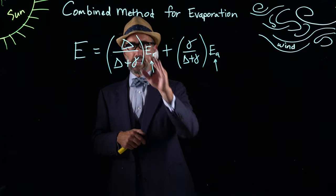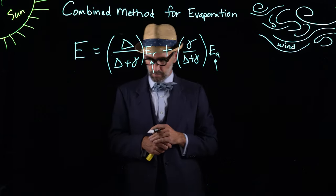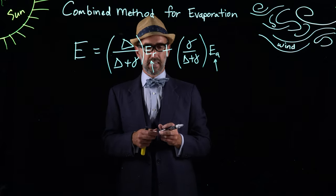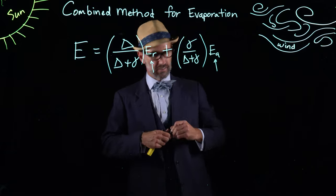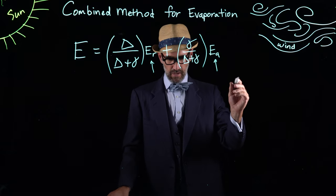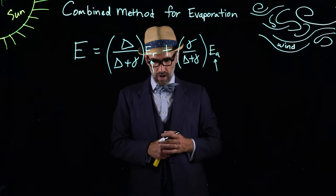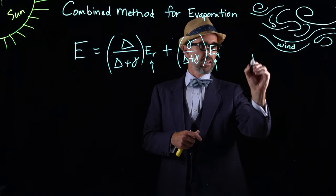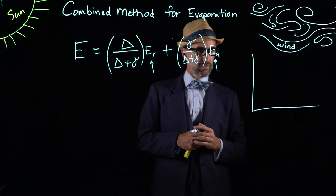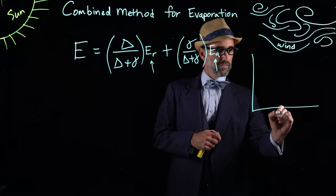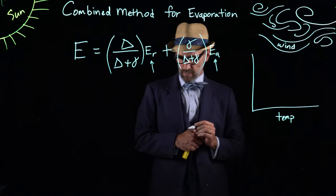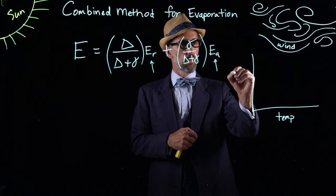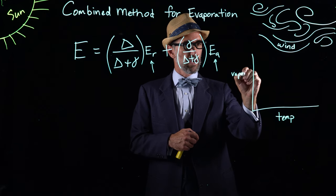So what is delta and gamma? The first is delta, which is the gradient of the saturation vapor curve. We'll talk about this a few different times. This is a graph on the horizontal axis of temperature and on the y-axis of vapor pressure.